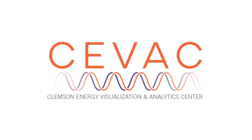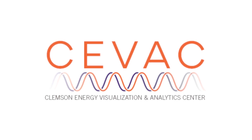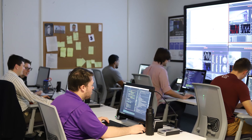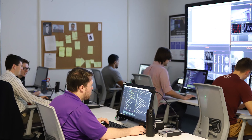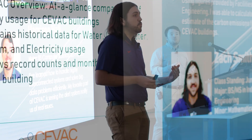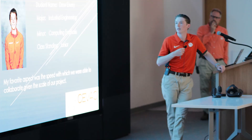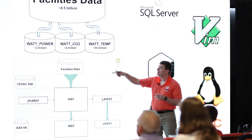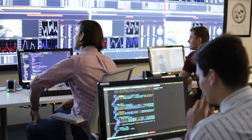We wanted to get a group of students involved with this data. We called it CVAC — the Clemson Energy Visualization and Analytics Center. It's a way for a group of students to get together and analyze the data. We've got students here using machine learning to better understand how much power we're not only using today, but how much energy we're going to be using tomorrow. CVAC is making Clemson a more energy-efficient campus.